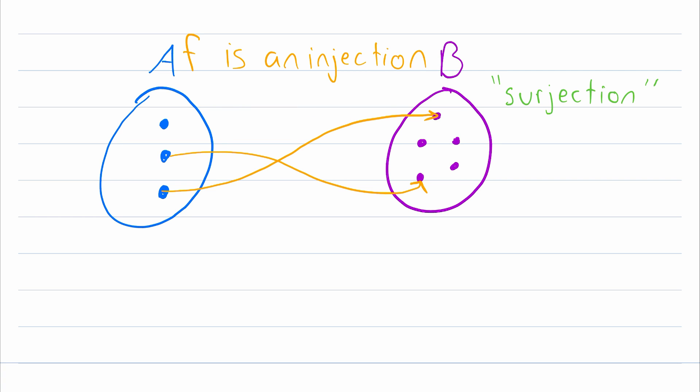Just to show you what a non-example would look like, if this element of the domain mapped to, say, this element of the codomain, this is no longer an injection, because we've got two distinct elements of the domain mapping to the same element of the codomain. So that would not be an injection.